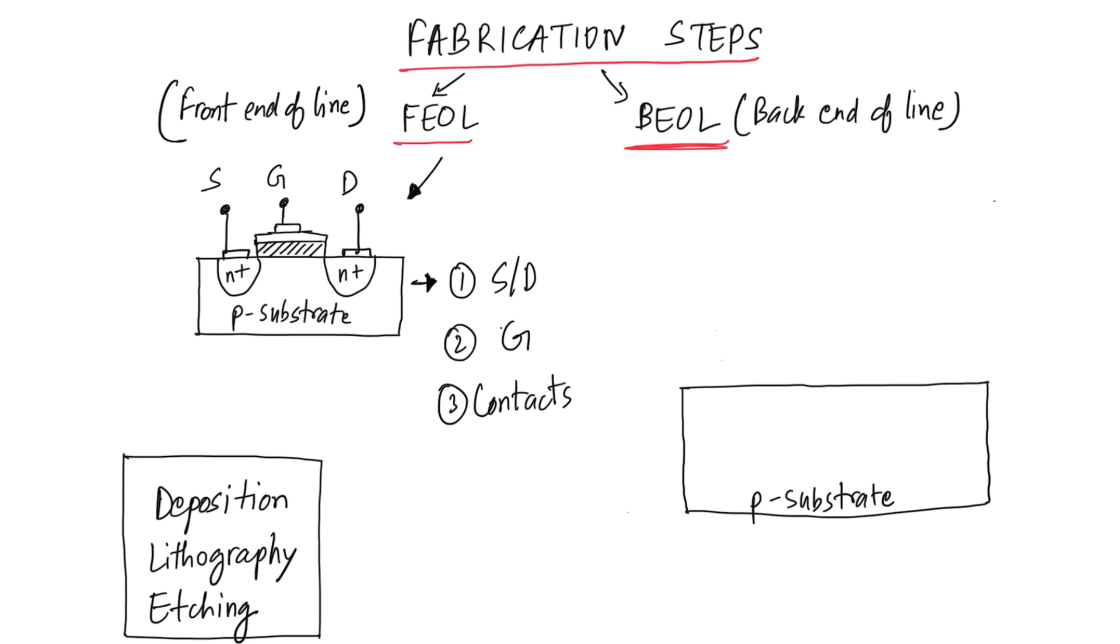This will be part 1 of the fabrication video, where we will discuss the FEOL stage of the fabrication. For example, here we have a simple NMOS device, which has the source, gate and drain built over the P substrate. One very important thing to note here is that there are three most important steps involved in the fabrication process, which are repeated over and over again during fabrication.